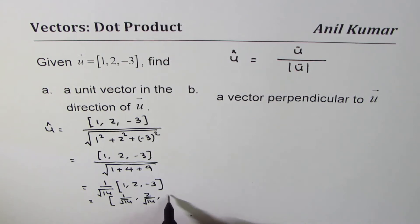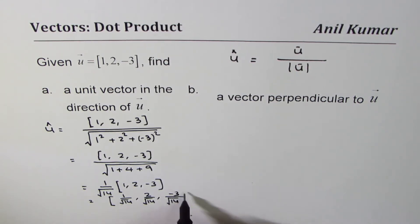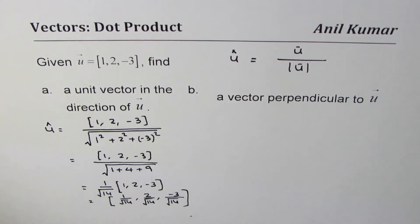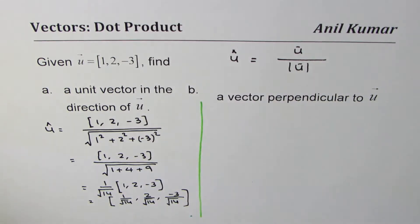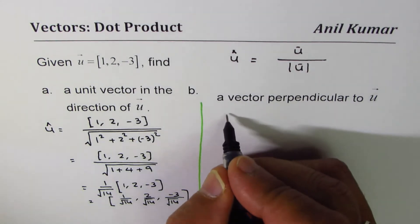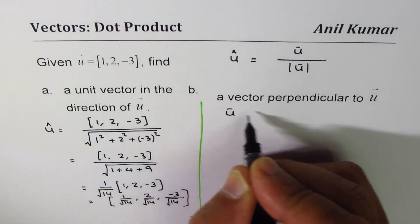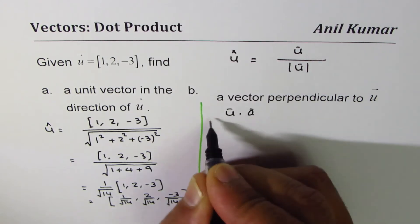That gives us components 1/√14, 2/√14, and -3/√14 — that becomes the unit vector u. Now let's do part b, which is finding a vector perpendicular to u.